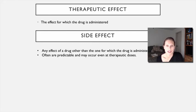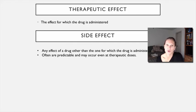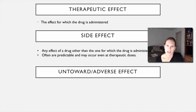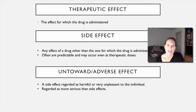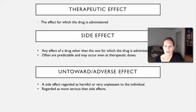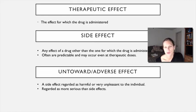A side effect is an additional effect. It can be harmful, or it can just be any effect other than that for which the drug is administered. Side effects are usually predictable — they're things we know about drugs, and if we know how a drug works, we can anticipate the side effects we're going to see. An untoward effect is a side effect that is potentially harmful or, at best, very unpleasant to the individual being administered the drug. Untoward effects and side effects are similar — the untoward effect is just a bit more unpleasant or potentially harmful for the patient.